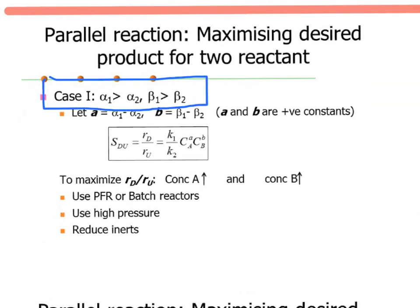For Case 1, where alpha1 > alpha2 and beta1 > beta2, both exponent differences are positive. Since both CA and CB terms are positive, operating at high concentration of both A and B increases the rate of the desired reaction, giving high selectivity. Therefore, the reactor options are PFR or batch reactor. If operating in gas phase, use high pressure and reduce inerts.